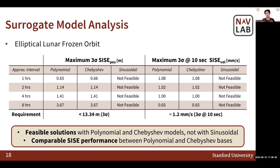Next, we explore the performance of the three individual surrogate models. In this presentation, we show results for the elliptical lunar frozen orbit; similar results were found for low lunar orbit, and we refer you to our paper for further discussion. We see that we are able to find feasible solutions with the polynomial and Chebyshev models, but not with the sinusoidal model. We do find comparable SIC performance between polynomial and Chebyshev bases. Both bases are part of the same surrogate model family, so we expect them to provide the same precision performance. Later, we will see how choosing one over the other can be beneficial for ephemeris broadcast.